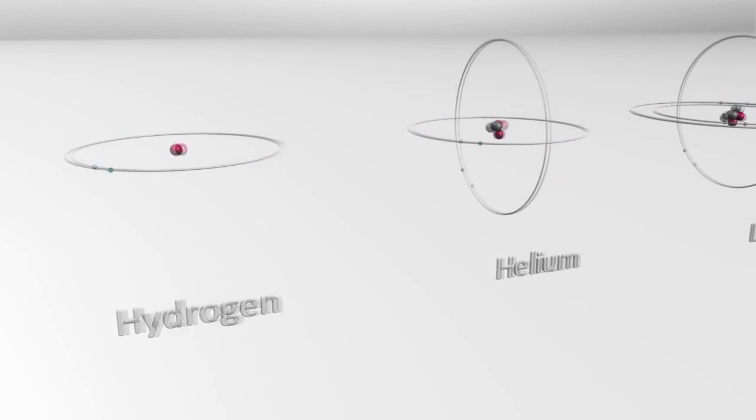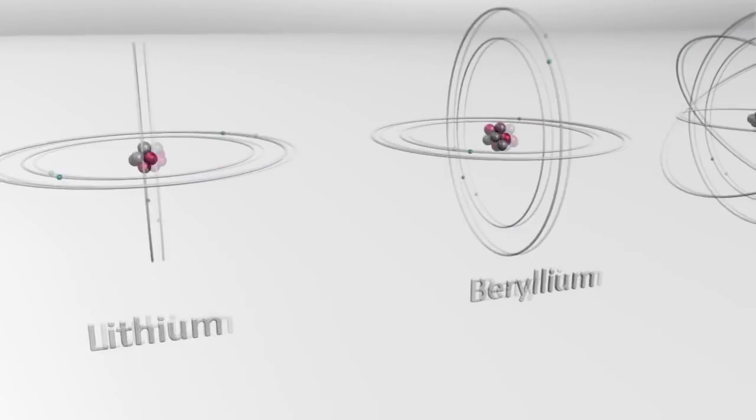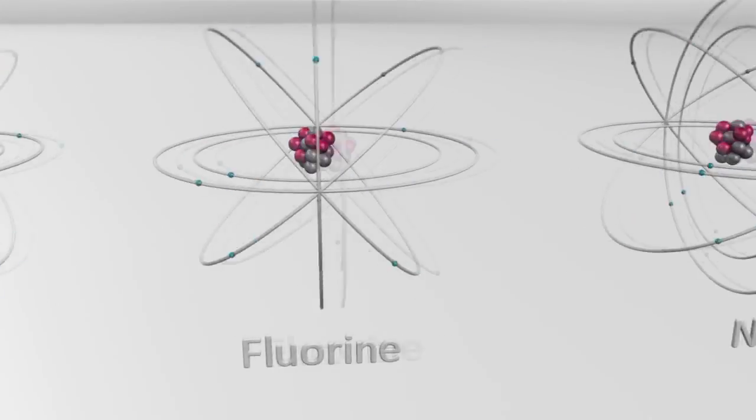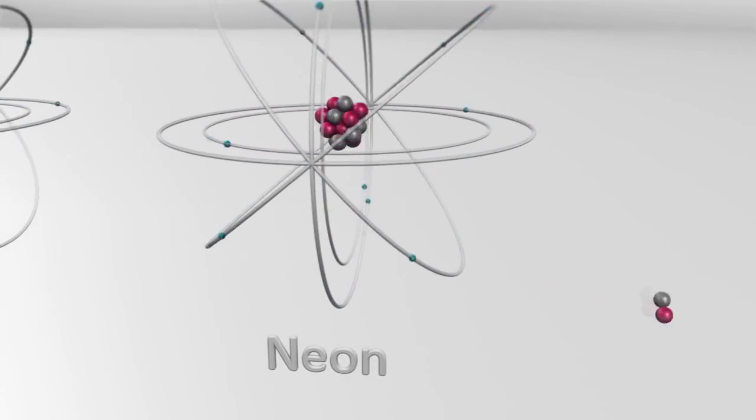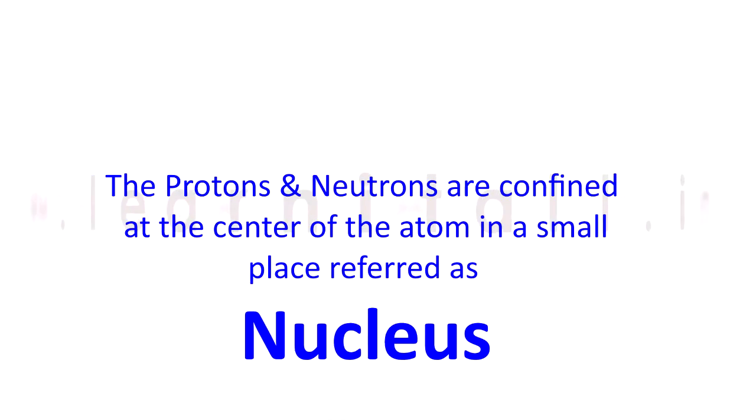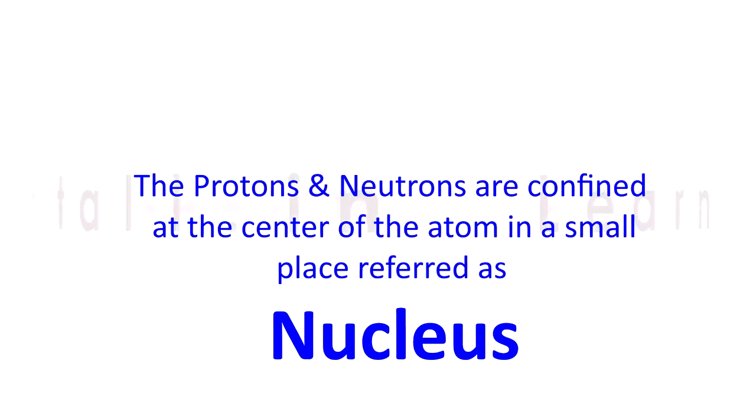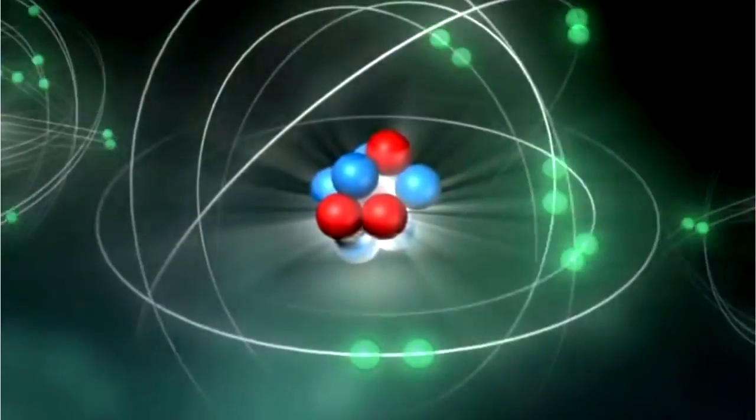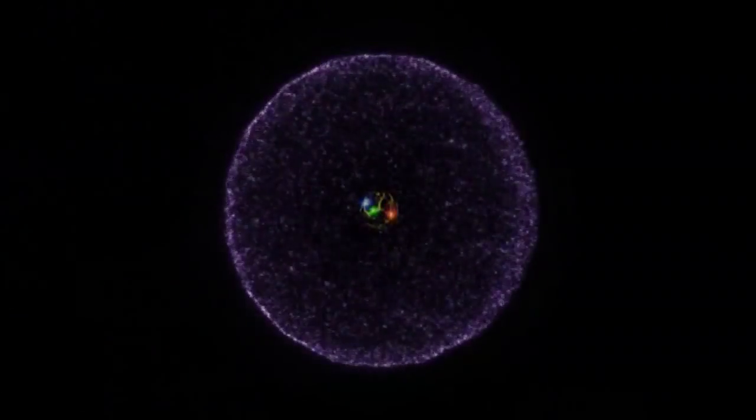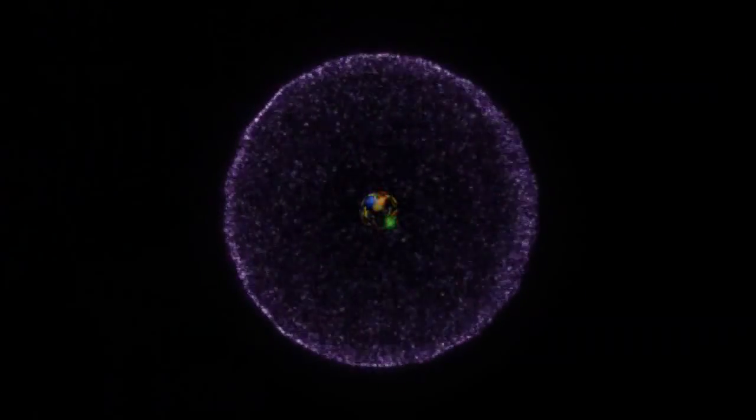Although all these or some of these particles are present in all atoms, the major elements of atoms are electrons, neutrons, and protons. The protons and neutrons are confined at the center of the atom in a small place referred to as the nucleus. They are bound together by a force called strong nuclear force resulting from sharing mesons. Electrons orbit the nucleus in multiple layers.